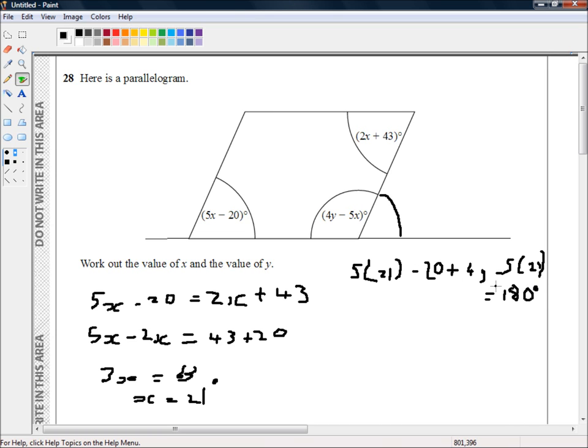Well, that is a minus 5x there. First of all, we've got 5 times 21 here, and we've got minus 5 times 21 here. So these can just be disappeared. They cancel each other out. We don't even need to figure out what 5 times 21 is. So we've got minus 20 plus 4y is equal to 180 degrees.